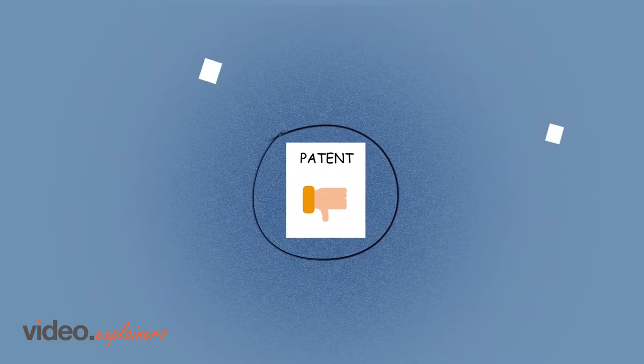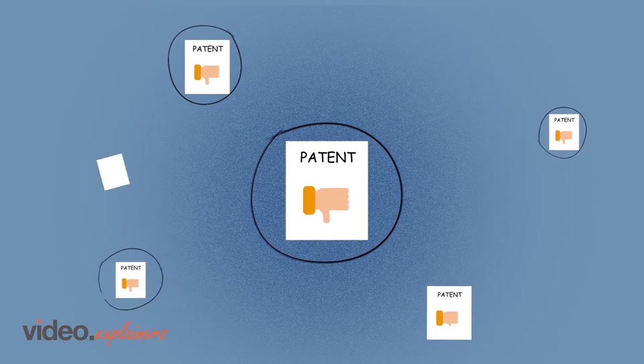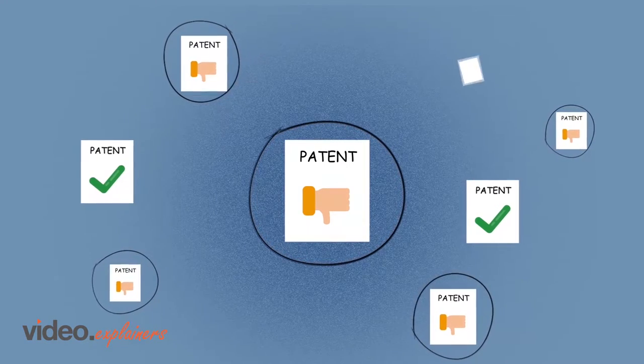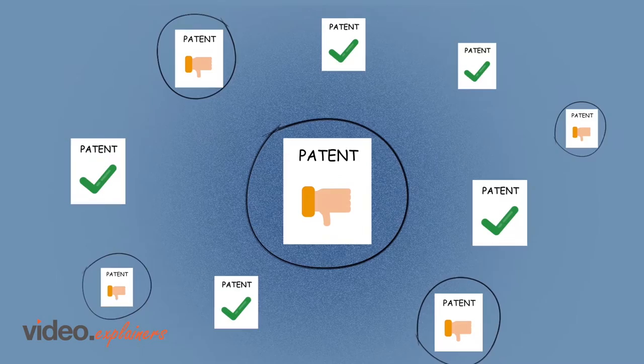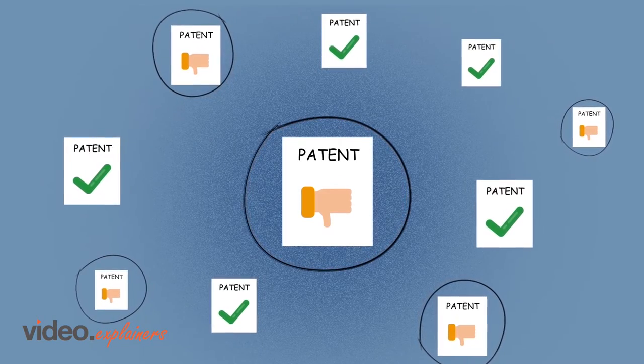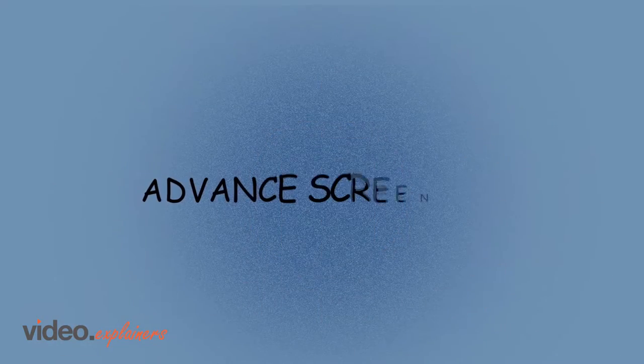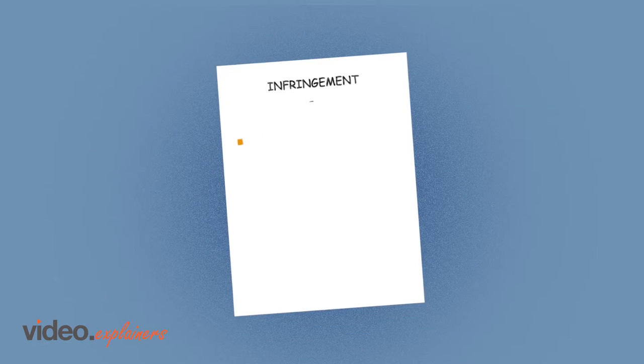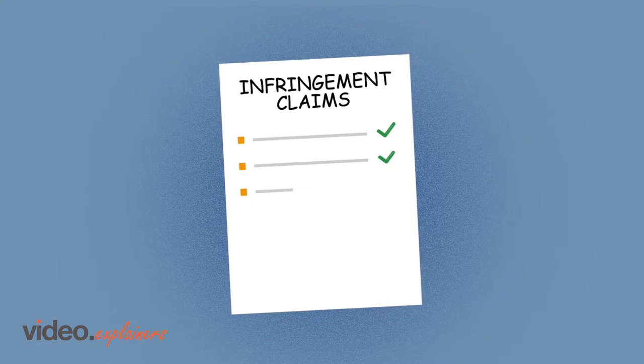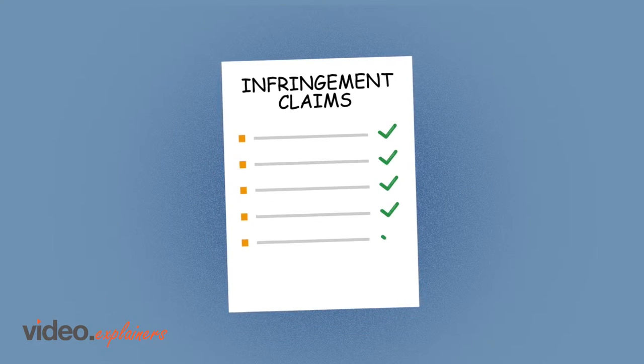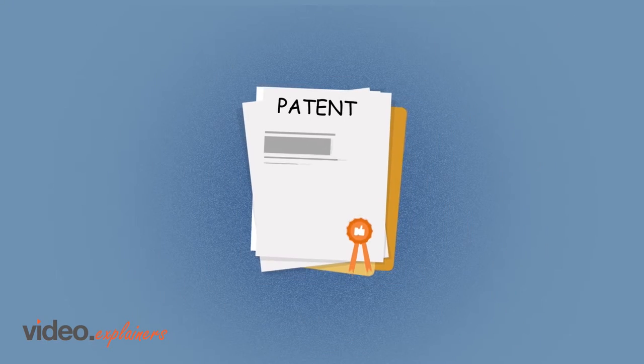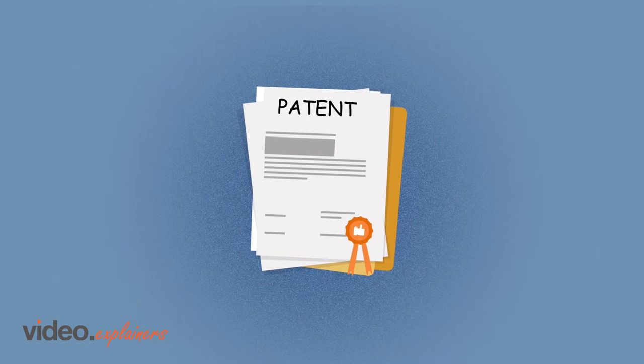We need to fight patent trolling upfront by adopting mechanisms that weed out low-quality patent lawsuits early in the litigation process. We propose a system of advanced screening, in which patent litigation is preceded by a preliminary evaluation of whether the plaintiff's infringement claims are reasonable and of whether the asserted patents are of high quality.